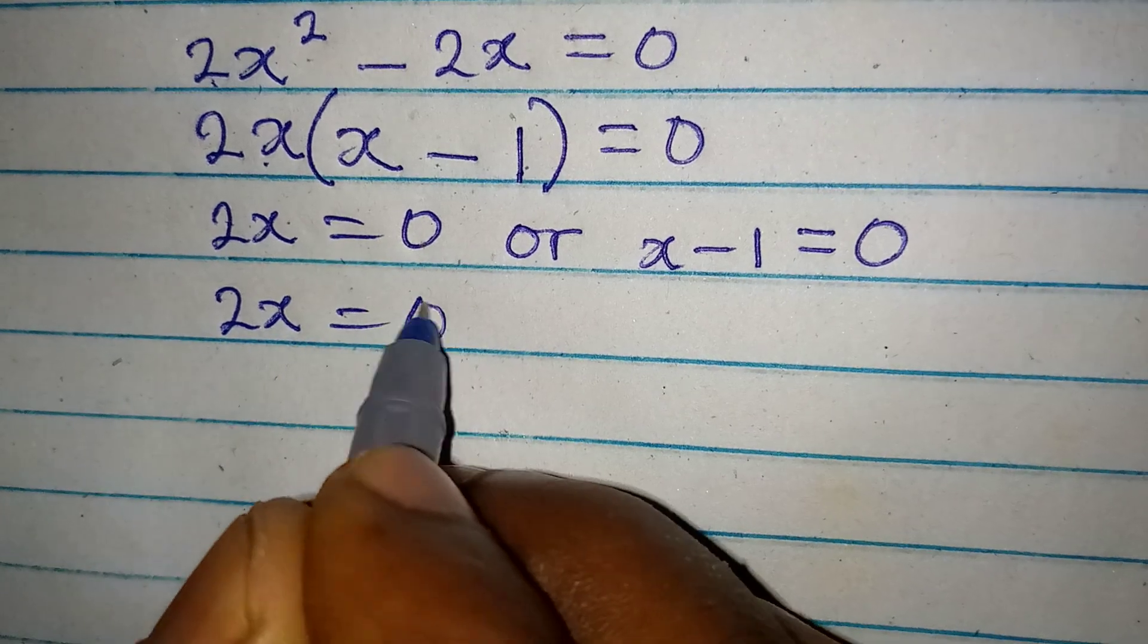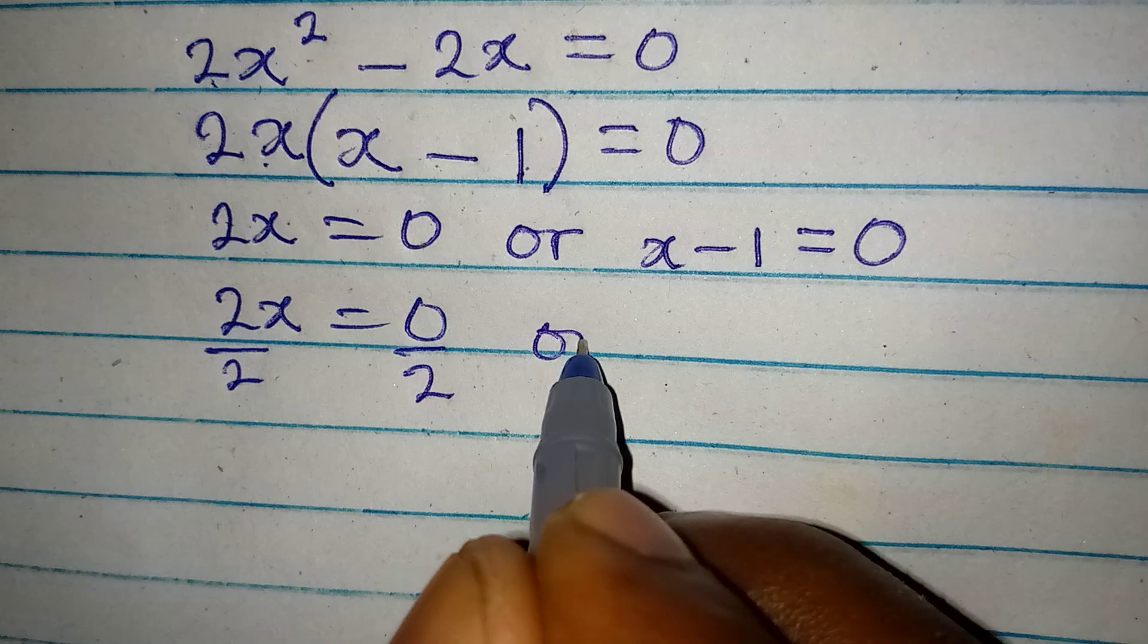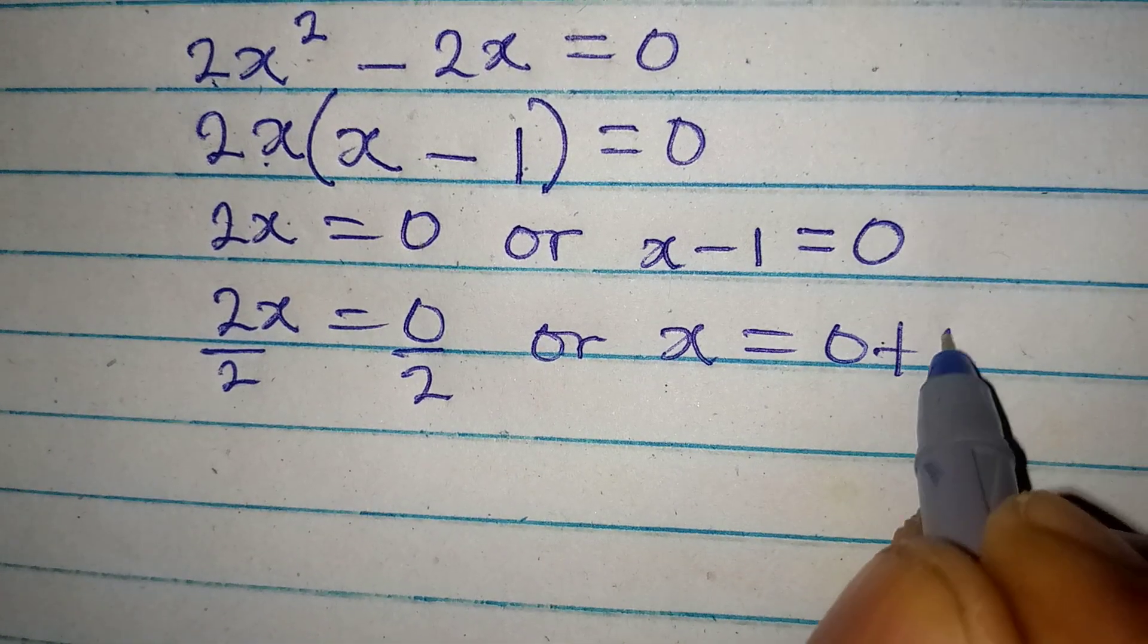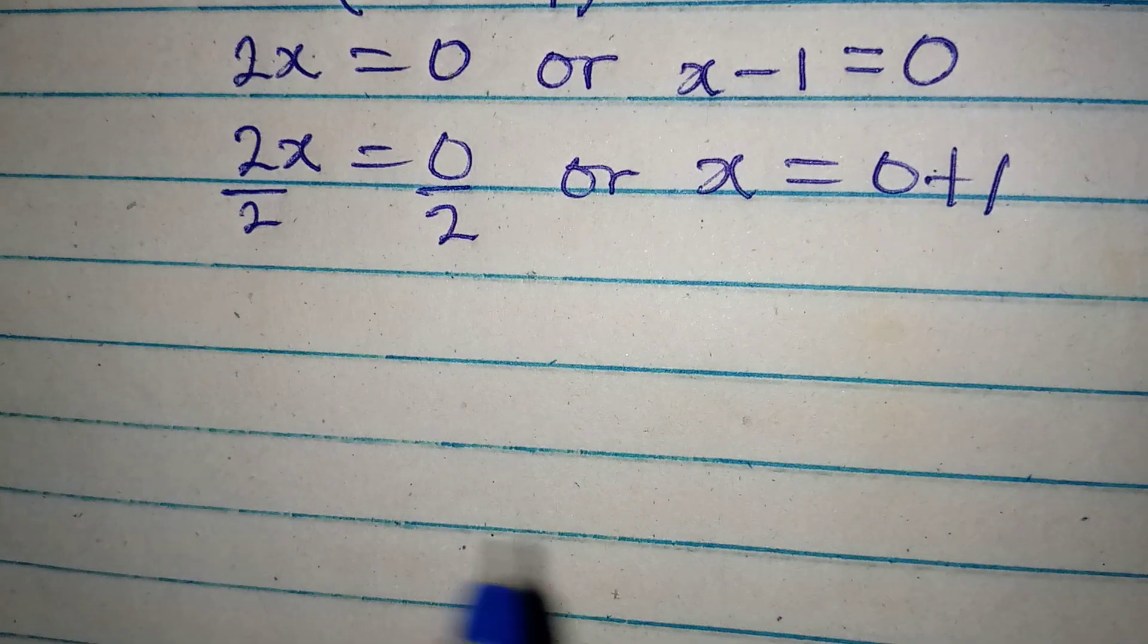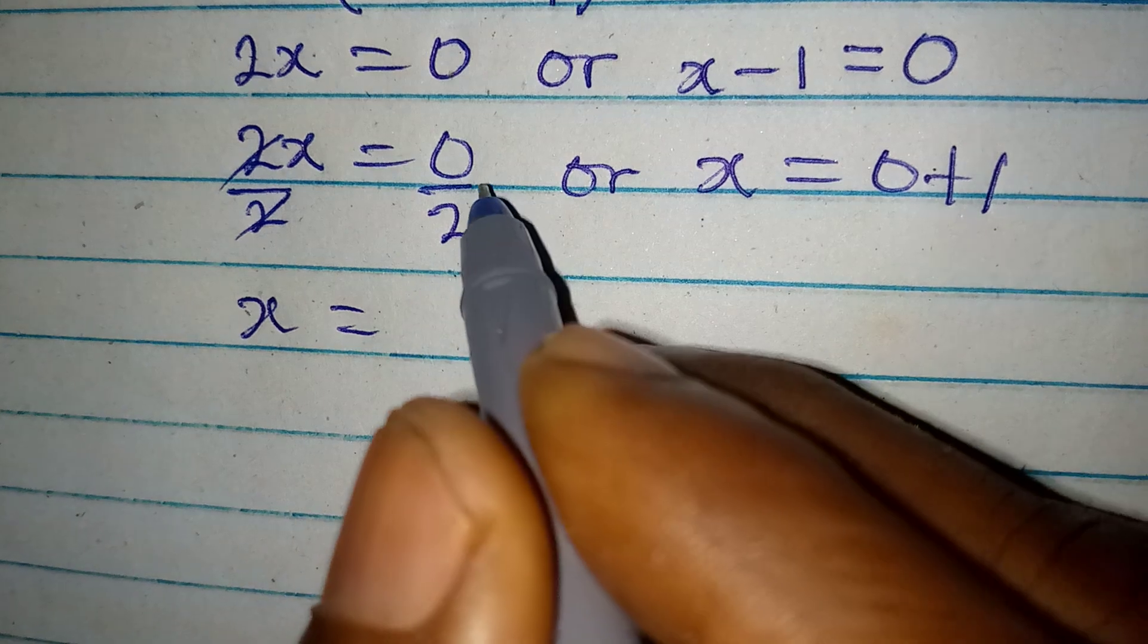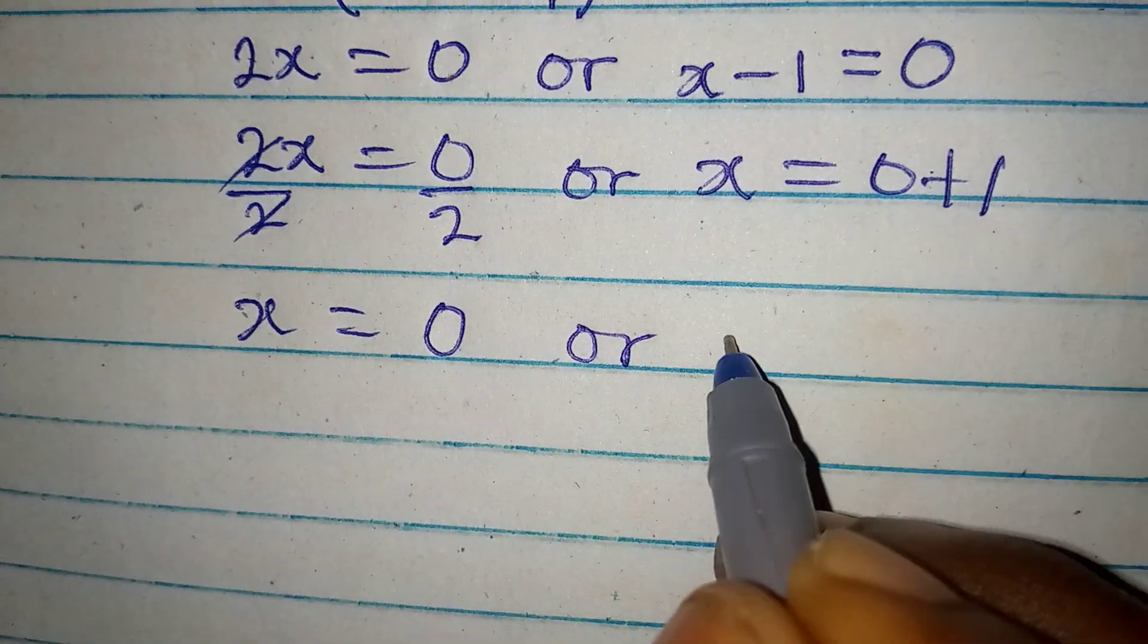2x is equal to 0, we can divide by 2 and divide by 2. Or on this side x is equal to 0 plus 1. This will give us x is equal to 0 over 2 which is 0.